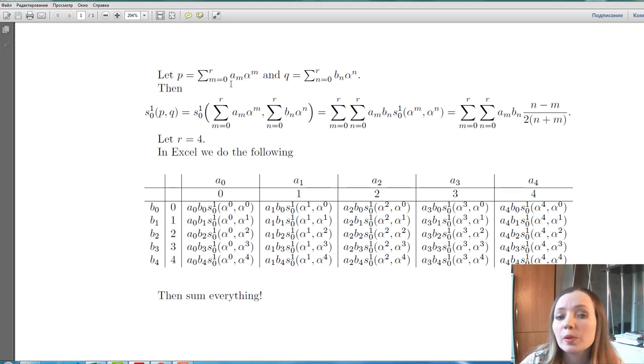Assume we have two polynomials, arbitrary polynomials of degree r. Then we know that the signed area from 0 to 1 of the corresponding curve can be written like this.